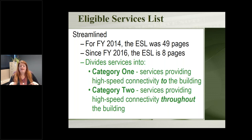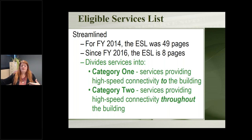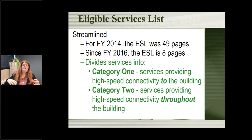The list is divided into two categories. Category one is services for getting your internet — your high-speed connectivity — to your building. Category two is for getting that internet throughout your building to all your devices once it's there. Think of it this way: category one is everything up to the walls of your building — paying for monthly internet and getting the connection there. Category two is the wires, cables, servers, routers, and everything else inside your building that allows your computers, tablets, and phones to use the internet.